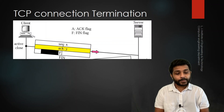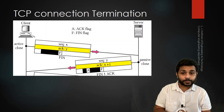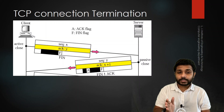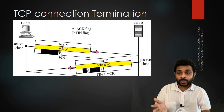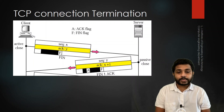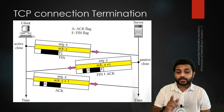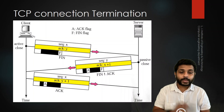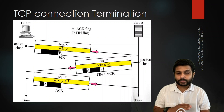When the server receives the FIN packet, it replies with FIN+ACK. From the ACK, the client understands that its termination request was received. From the FIN flag, the client understands the server also wants to close the connection. So the client sends a final ACK with the ACK flag set to 1. This is how the TCP connection is terminated. Thank you.